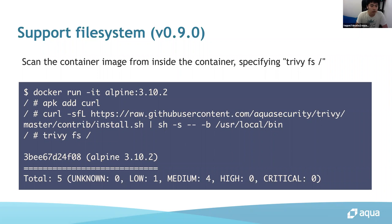Trivy can also scan the container image from inside the container. In this case, first log into the container image — for example, Amazon Linux 2 3.10 — install the dependencies, and install the Trivy binary. The install script detects the OS and architecture and downloads the Trivy binary according to your environment. Finally, just specify slash with the fs subcommand and you can see the result.